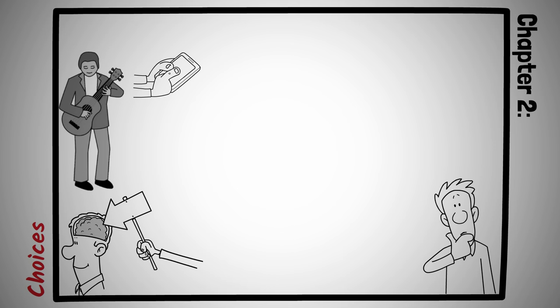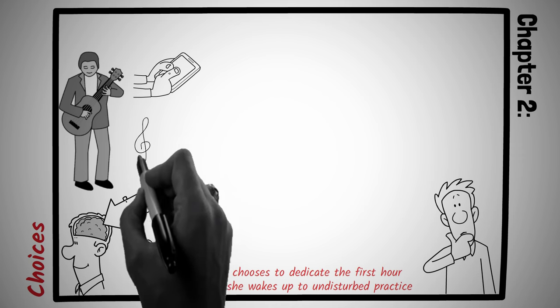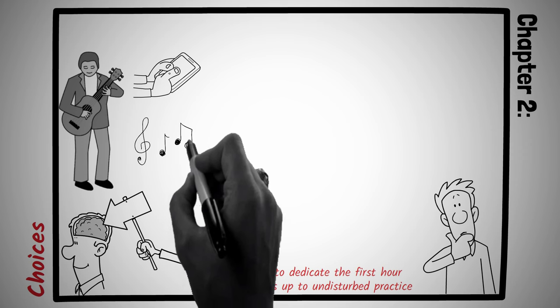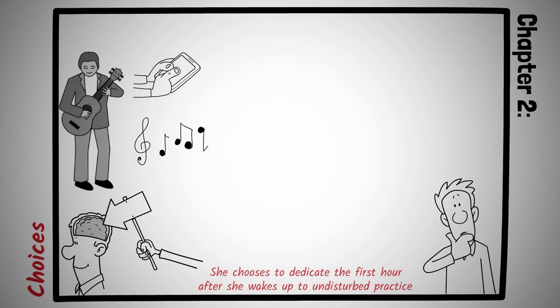Across town there's Elena, another musician of similar skill. Instead of succumbing to distractions, she chooses to dedicate the first hour after she wakes up to undisturbed practice. In the short term, the difference in their daily choices might not seem drastic, but over months, while Dylan struggles with the same musical pieces, Elena masters more complex compositions, performs at local events, and even starts teaching young enthusiasts. Their paths diverge significantly, all because of one hour spent differently each day.